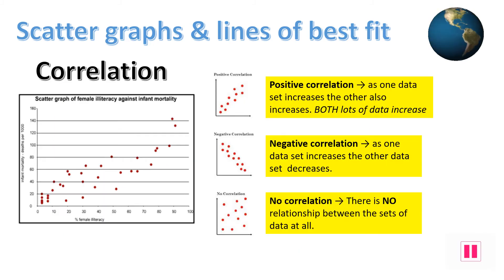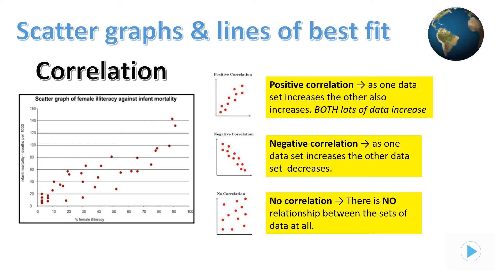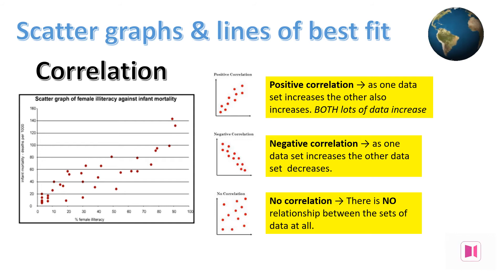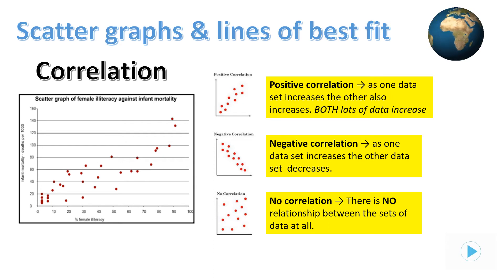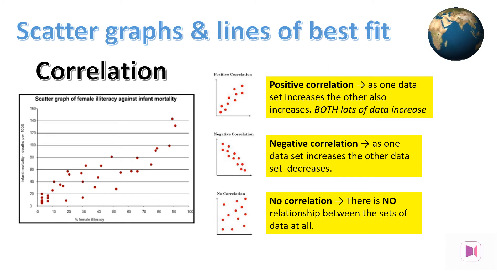When asked to describe the relationship in a scatter graph, you need to use the term correlation. A strong correlation means that the two sets of data are very closely linked. A positive correlation is shown if the data is moving upwards to the right — this means that as one thing increases, the other also increases.